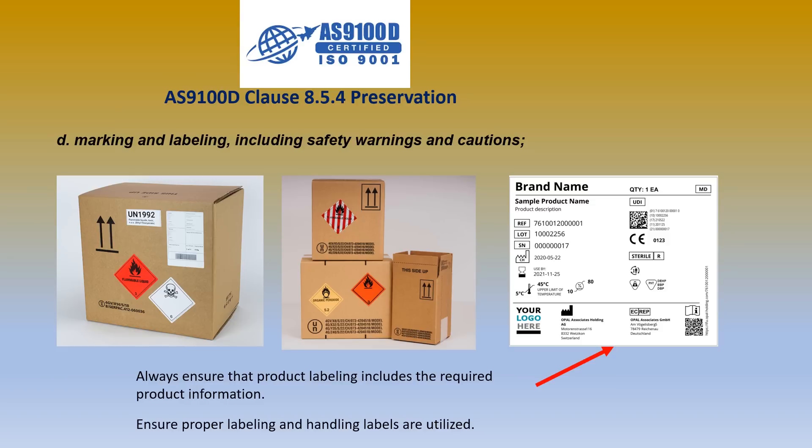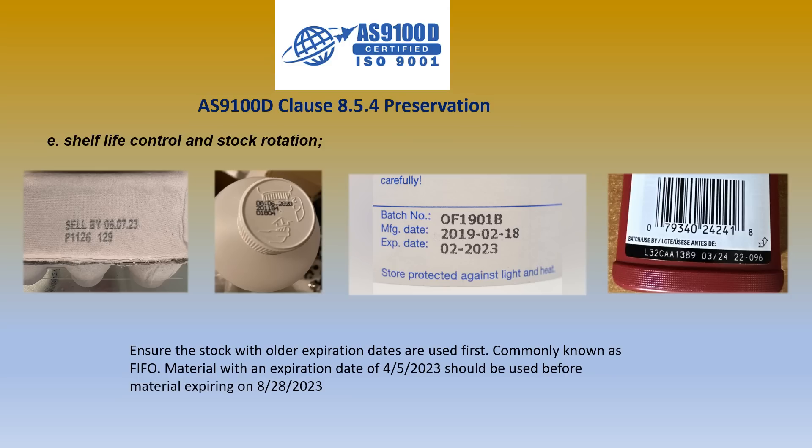Moving on to sub-Clause D, marking and labeling including safety warnings and cautions. It's very important that you always ensure that product labeling includes the required product information, as you can see in the example photographed to the far right. You also want to ensure that proper labeling and handling labels are utilized. In these examples, you see a flammable liquid label, an organic peroxide label, and a flammable solid label adhered to these packages. You also see the common double-sided up arrows, which indicates this side up for handling of the package.